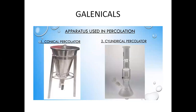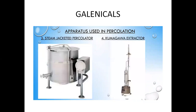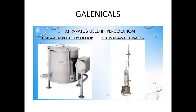Different types of percolators used for preparing galenicals include the conical percolator, cylindrical percolator, steam jacketed percolator, and Puma Gava extractor. This concludes the overview of galenicals.